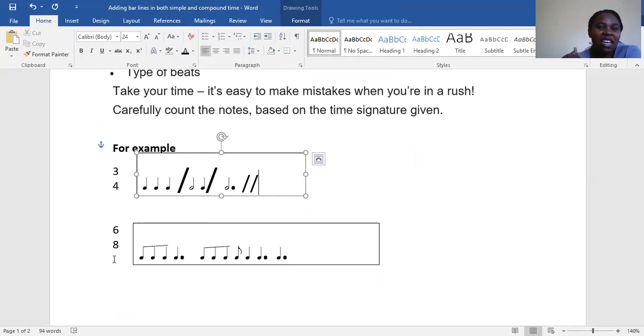Anytime you have four at the bottom, you know it is a crotchet. Anytime you have two at the bottom, you know that is a minim. So I'm going to count six quavers.